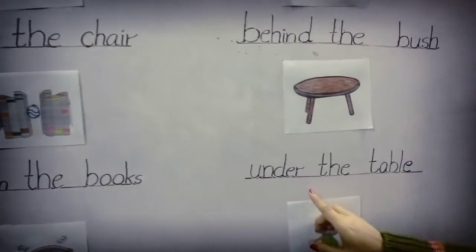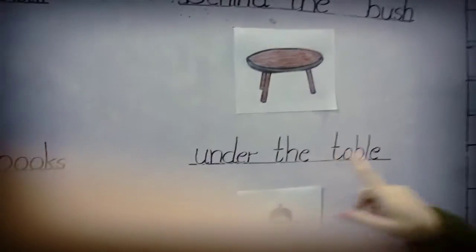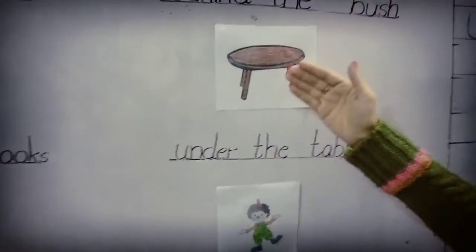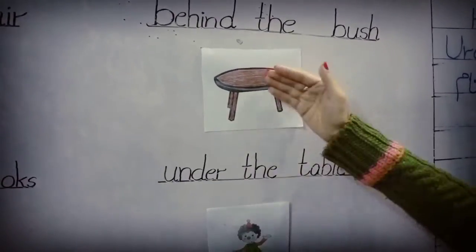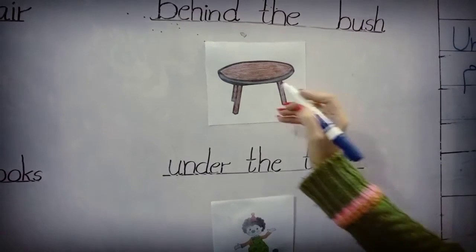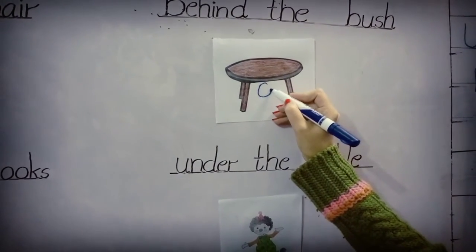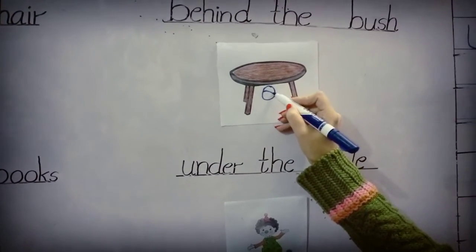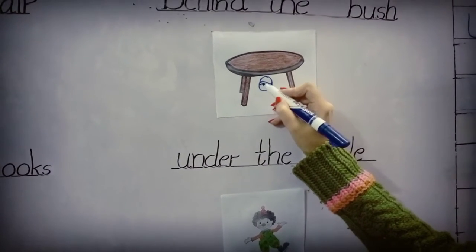Next is 'under the table.' Under means neiche — table ke neiche. Draw the ball under the table, like this.